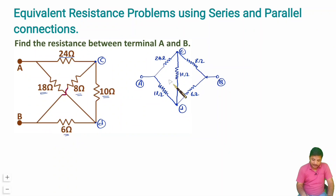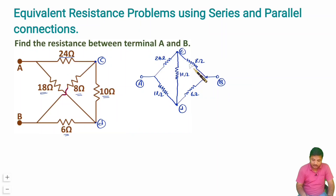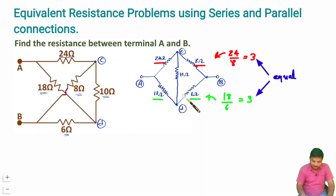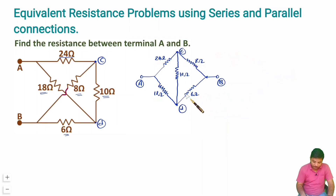This circuit is similar to a Wheatstone bridge, and before going for star-delta conversion you should check whether the bridge is in balance condition or not. You can see 24 divided by 8 equals 3, and 18 divided by 6 equals 3 — so this bridge is in balance condition. Alternatively, 24 by 18 equals 8 by 6, and both methods confirm the balance condition.